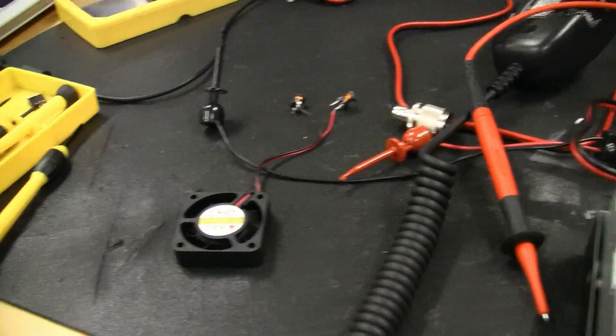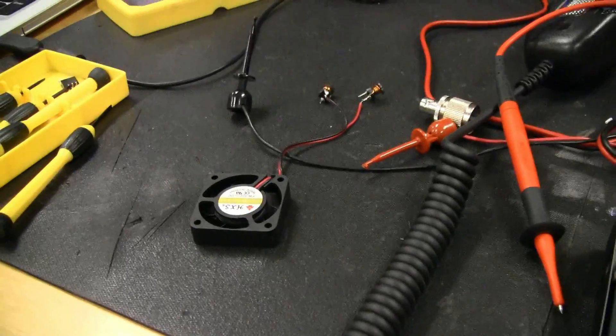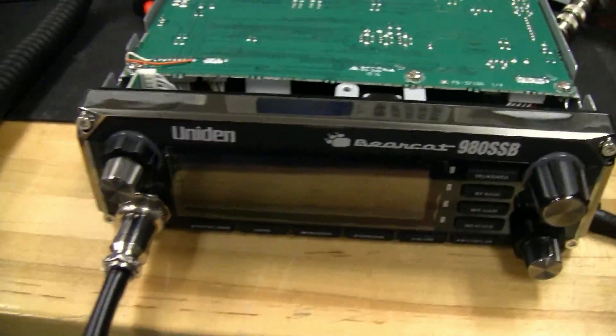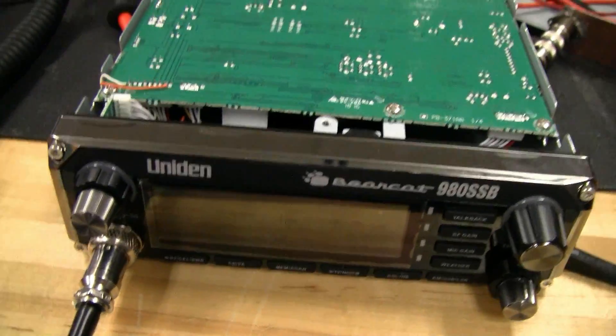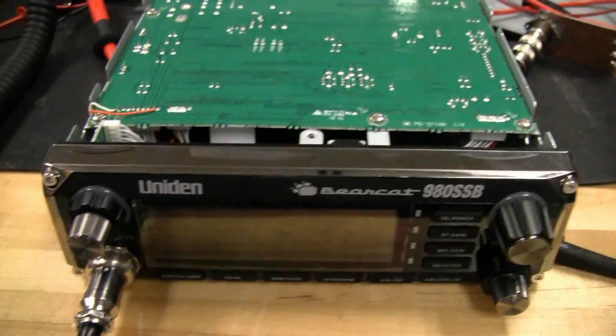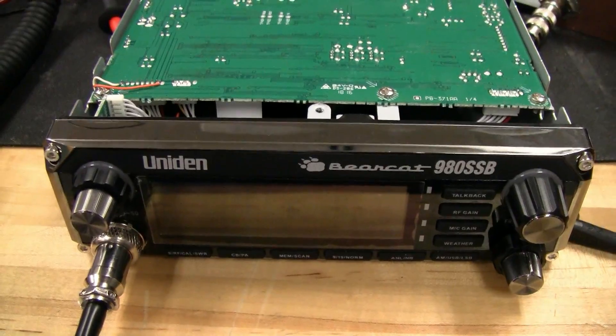Hey everyone, welcome back to the Microwave Lab. This is going to be a video about adding a fan to my CB radio, this Uniden Bearcat 980. It gets a little bit warm when I'm using it. Maybe that's some of the components I replaced, or maybe that's just the way it is.